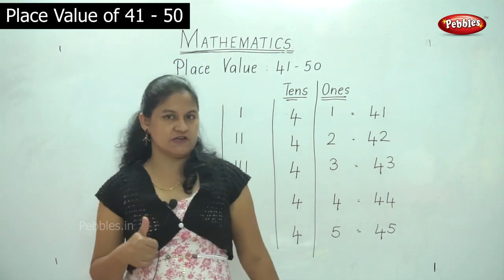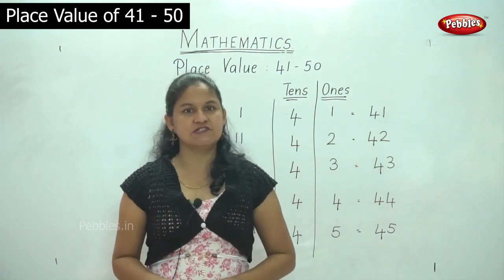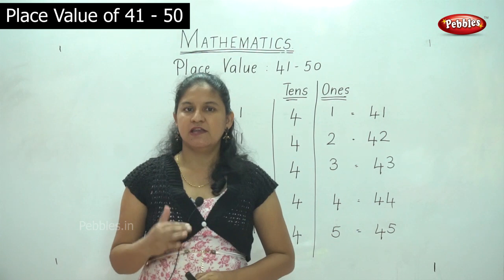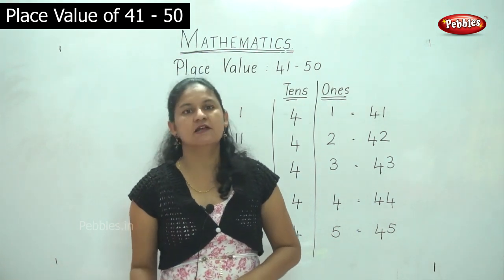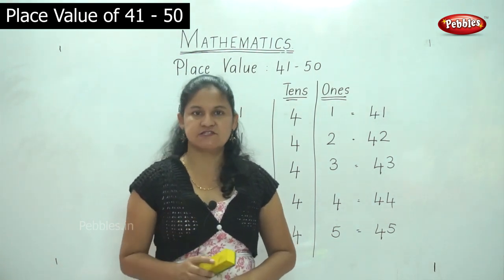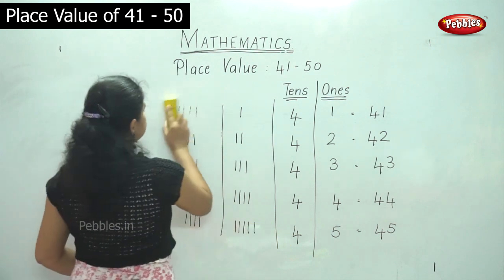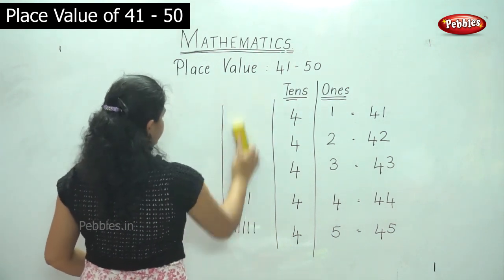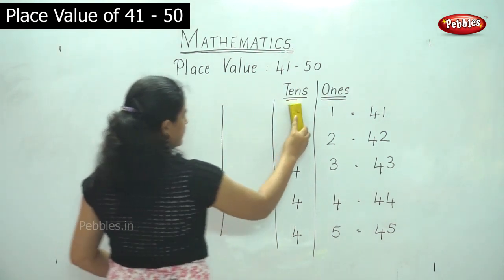So you have understood the place value for the numbers 41 to 45. Next we will move on to the next 5 numbers, that is 46 to 50.